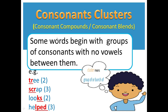Consonant clusters are also called consonant compounds or consonant blends. The definition is: some words begin with groups of consonants with no vowels between them. Whenever you have two, three, or even four consonants with no vowel between them, that is called a consonant cluster. 'Cluster' itself means a group or a bunch.